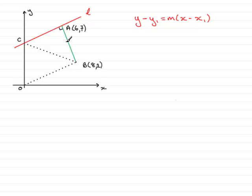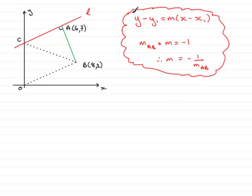So if the gradients, let's say the gradient of AB is m_AB and the gradient of the line L, which we want, is m, we know that if we multiply those two gradients together, you should always get negative 1 when they're perpendicular. So we can get m as being minus 1 over the gradient of the line AB. So that's a bit of background to what we should be doing.